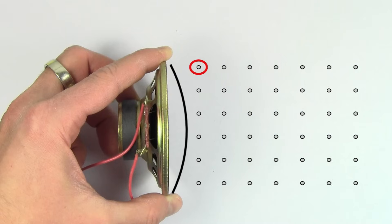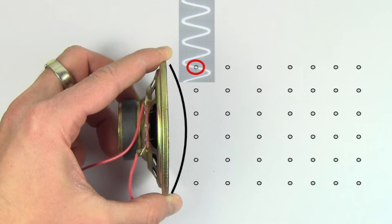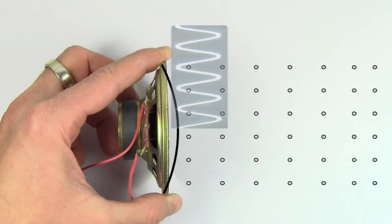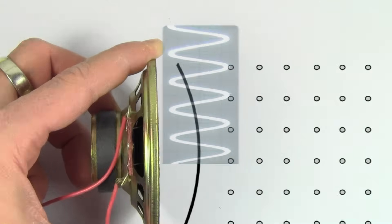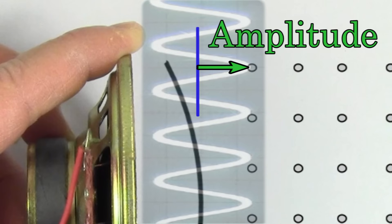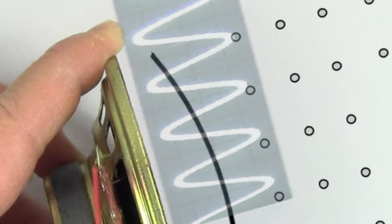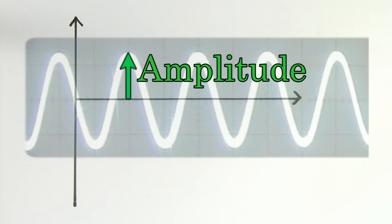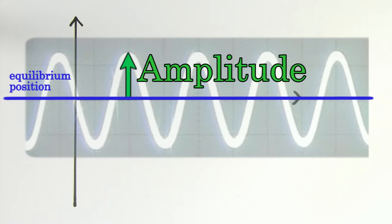If we turn up the volume, we see that the oscillations become larger and the sound becomes louder. The maximum displacement of the air molecule from its undisturbed position is called the amplitude. Be careful — the amplitude is not the length of the entire displacement. It's only the maximum displacement measured from the equilibrium position.